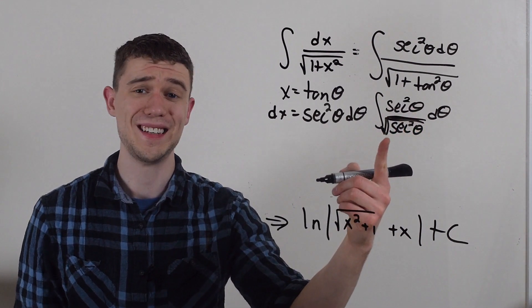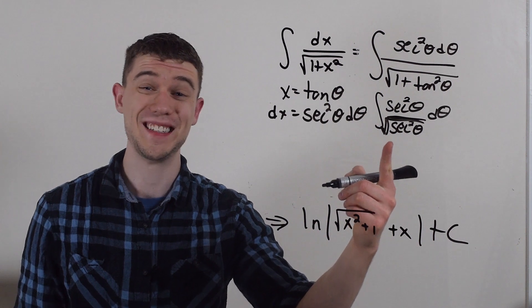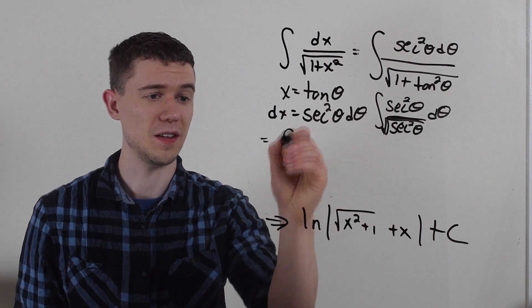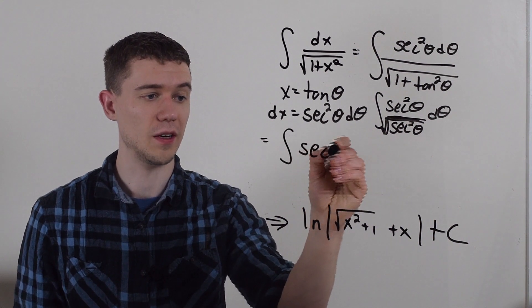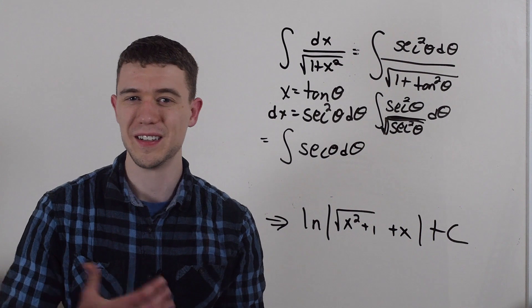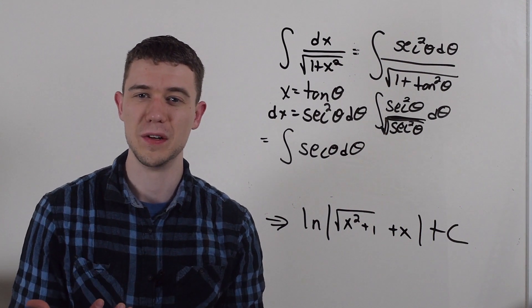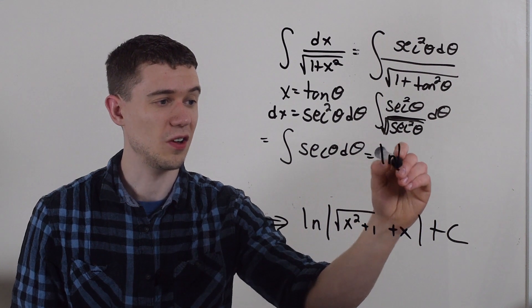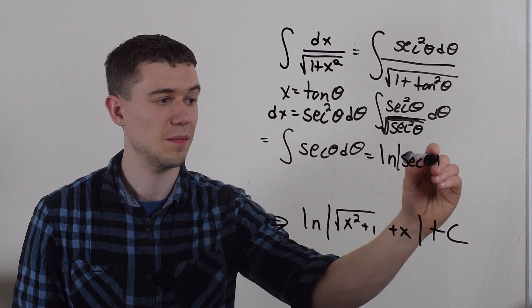And so if I square root that secant squared on the bottom it'll just be secant. So I'll have secant squared over secant. This will just be the integral of regular secant. And if you remember a bit about trig, and so this is where your knowledge of trig has to come into play, the antiderivative of regular secant is natural log of secant plus tangent.